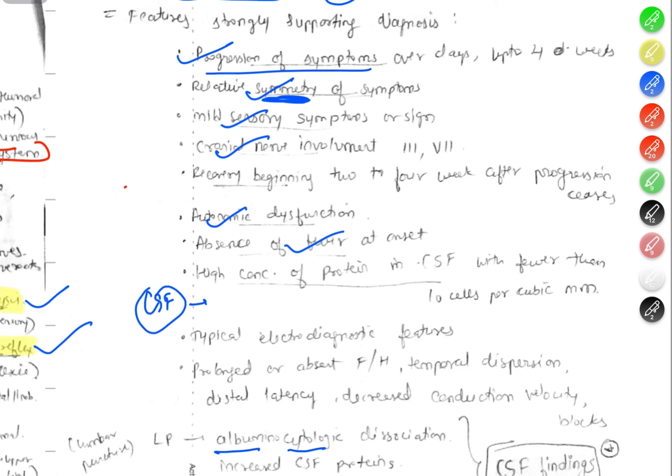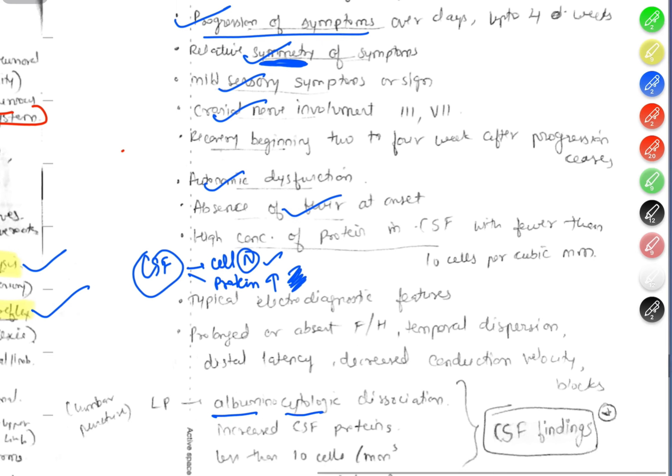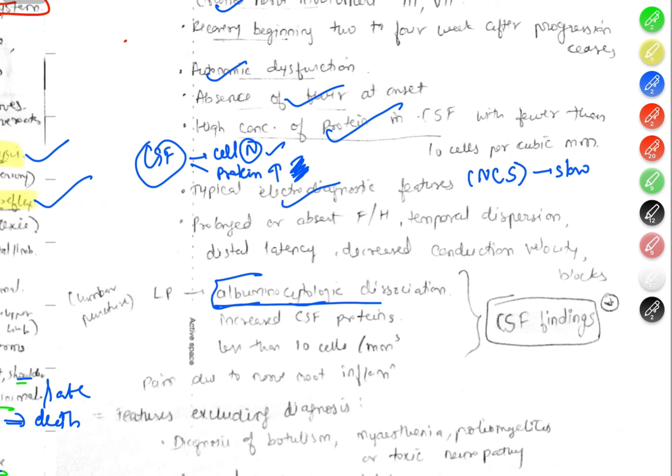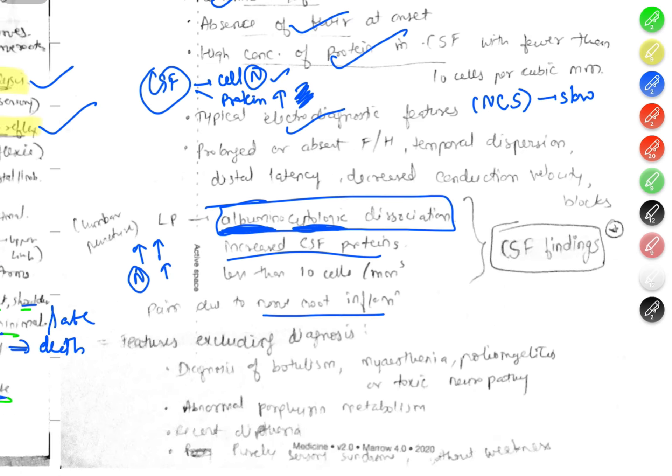CSF findings show elevated CSF protein with normal cell count, which is called albuminocytological dissociation. High concentration of protein in the CSF is typical. Increased CSF protein, pain occurs due to nerve root inflammation.